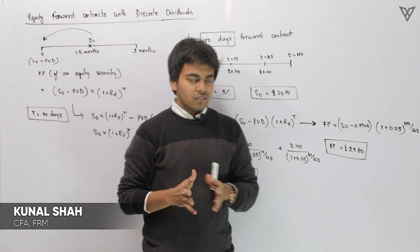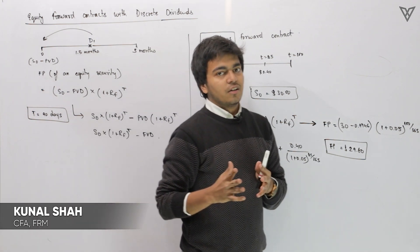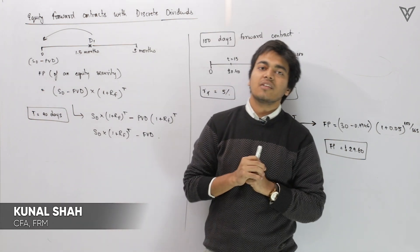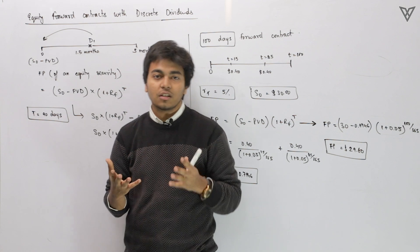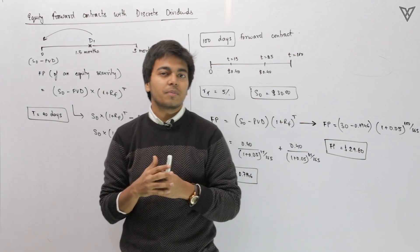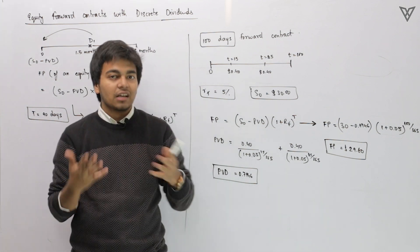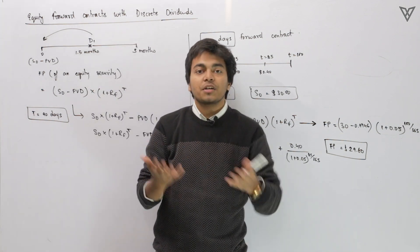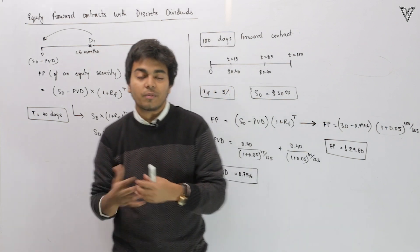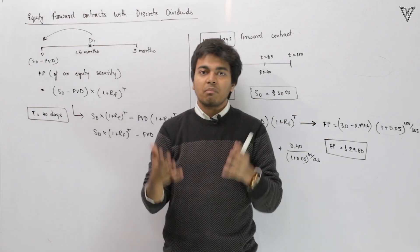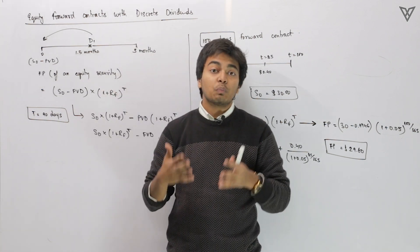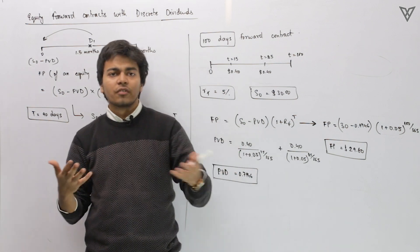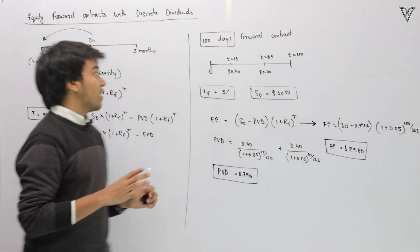Hi there. In the previous session we exactly understood how to calculate forward price, and at the very same time, whenever the no-arbitrage principle is getting violated, how do we make arbitrage profit out of it — whereby we are not investing anything from our pockets but yet we are able to make some profits at the end of the tenure of the forward contract.